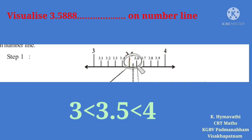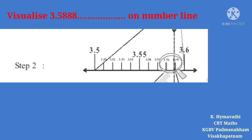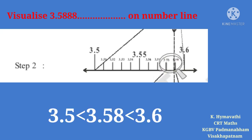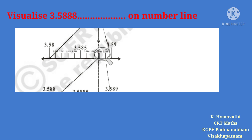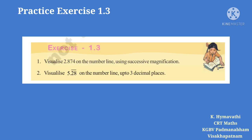To locate 3.58 bar on the number line: 3.58 bar lies between 3 and 4. Step 1: 3.5 lies between 3 and 4. Take a number line between 3.5 and 3.6; here 3.58 lies between 3.5 and 3.6. Then take a number line between 3.58 and 3.59; 3.58 bar lies between 3.58 and 3.59. Continue this successive magnification process to pinpoint the location.